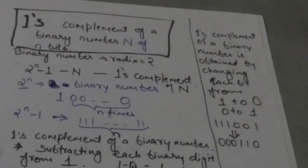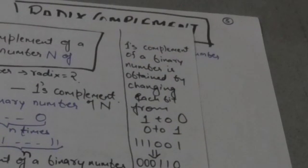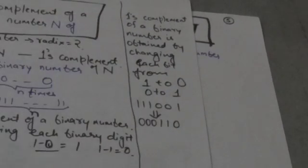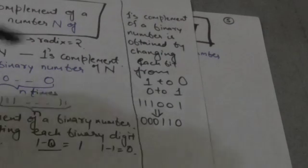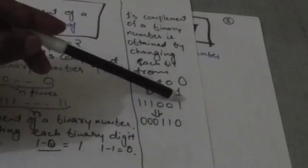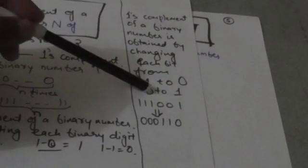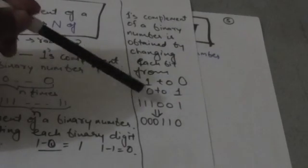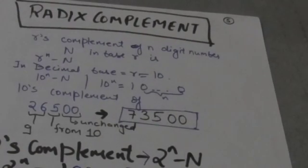So the 1's complement of a binary number is obtained by changing each bit from 1 to 0 and from 0 to 1. Suppose the binary number is 1 1 1 0 0 1. Its 1's complement is obtained by flipping each bit: the bit 1 is changed to 0, the two 0-bits are changed to 1 1, and the three 1-bits are changed to 0 0 0.